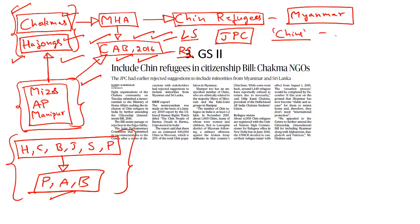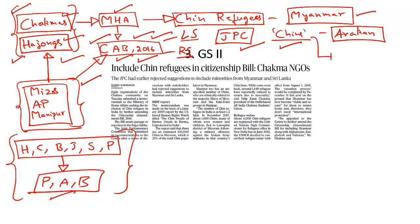The Chins are an ethnic group found in the Arakan region of Myanmar who have faced violence and persecution due to ethnic violence. The joint parliamentary committee has already rejected granting citizenship to refugees from Myanmar, but the Chakmas base their demand on the fact that Chins are ethnically related to local tribes in Mizoram and Manipur. Essentially, the Chakmas are trying to counter opposition in the Northeastern states by including Chins, who are ethnically related to the Mizos and Kukis.